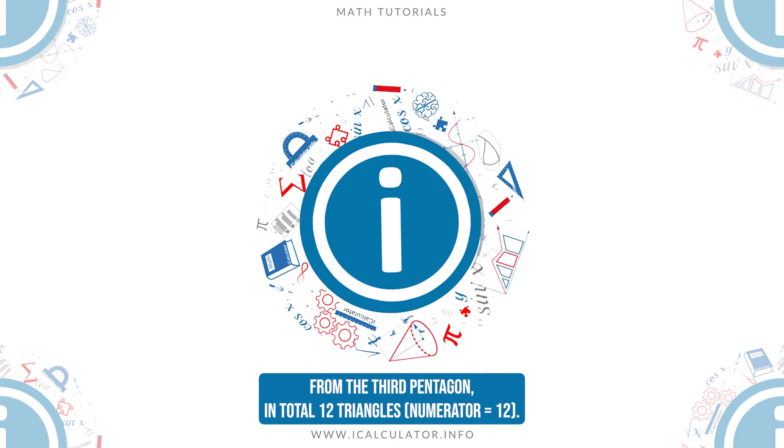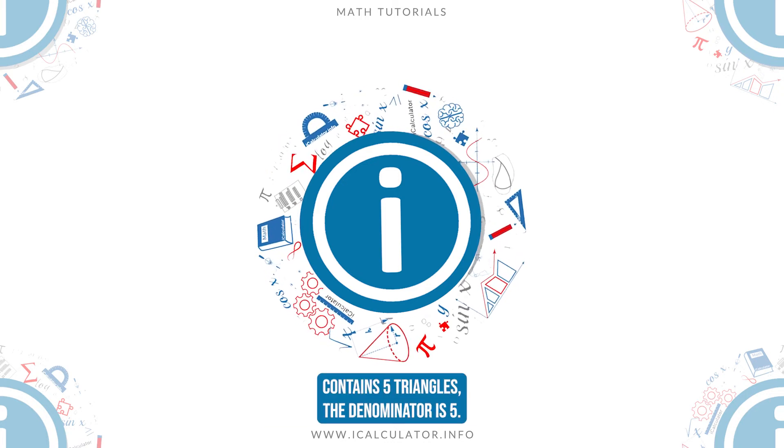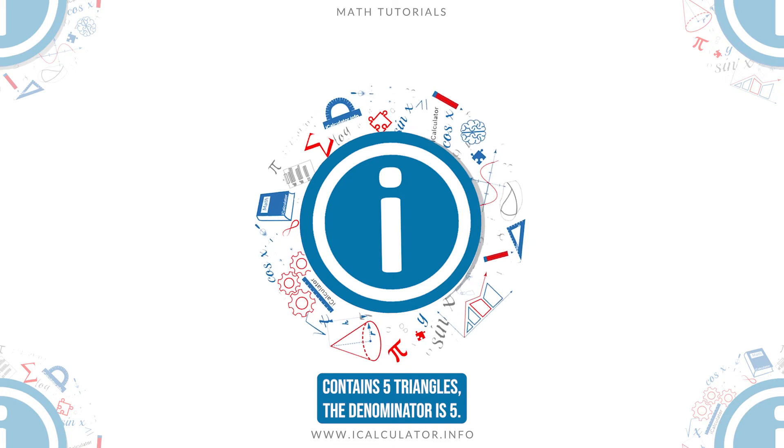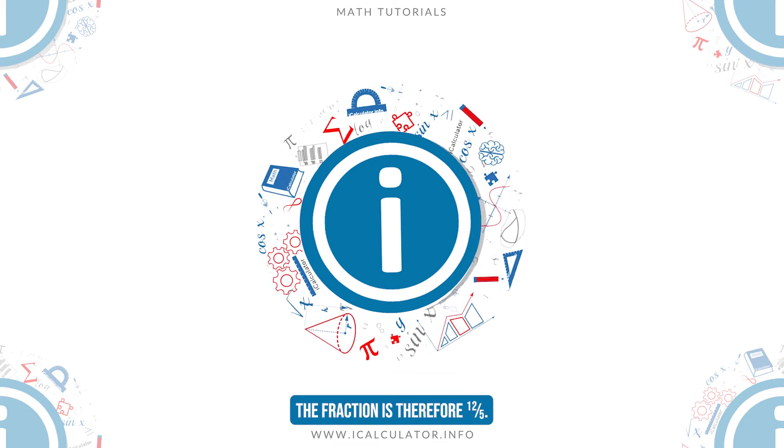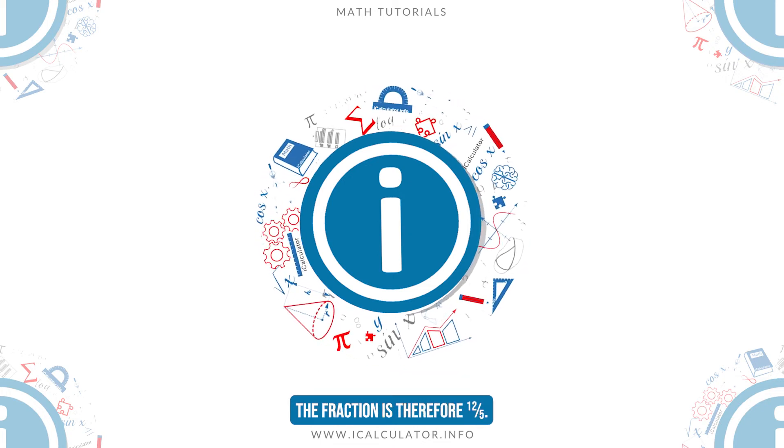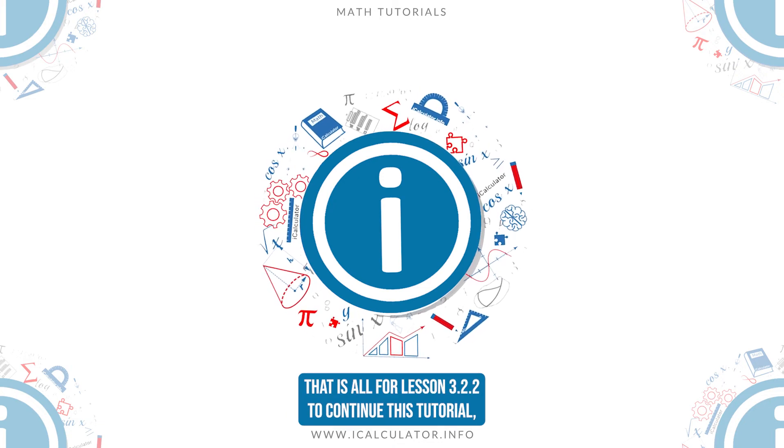The numerator equals 12. Since each pentagon contains 5 triangles, the denominator is 5. The fraction is therefore 12 fifths. That is all for lesson 3.2.2.